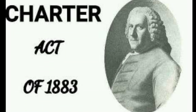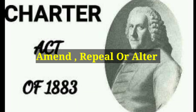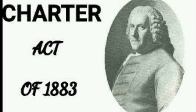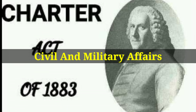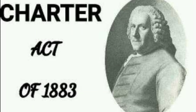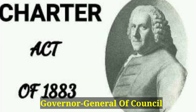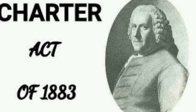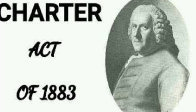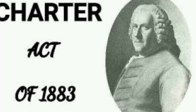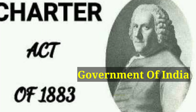The Governor General in Council had the authority to amend, repeal, or alter any law pertaining to all peoples and places in British Indian territory, whether British, foreigner, or Indian native. The Civil and Military Affairs of the company were controlled by the Governor General in Council. The Governor General's Council was to have four members, with the fourth member having limited power only. For the first time, the Governor General's government was called the Government of India and the Council was called the Indian Council.